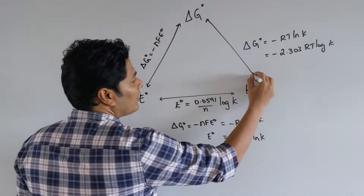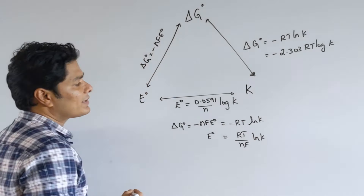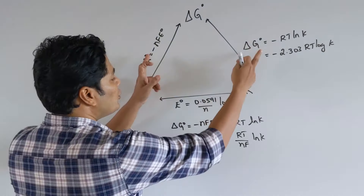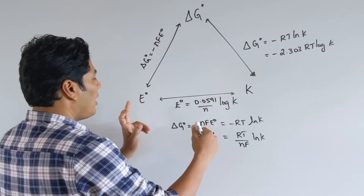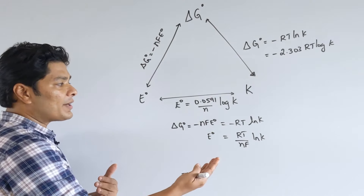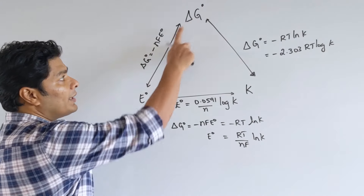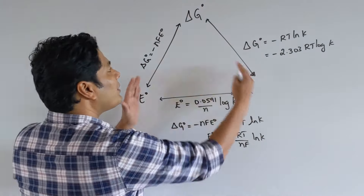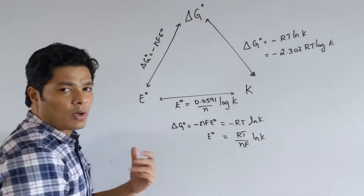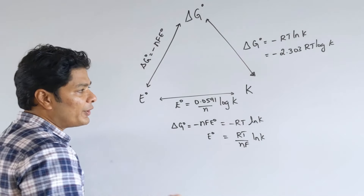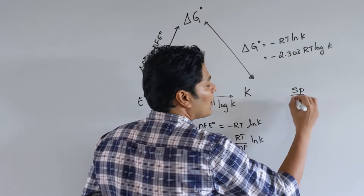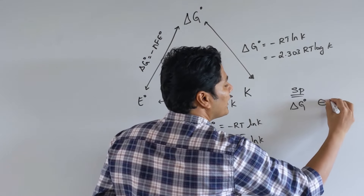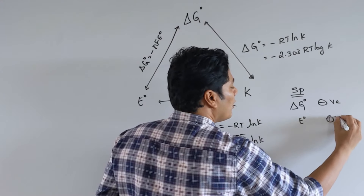Remember this triangle — I usually call it the 'holy triangle.' It relates three different properties and you should be able to do any of them. These two equations will give you the setup. For a spontaneous reaction, E° is positive and ΔG has to be negative. Anytime you want a spontaneous reaction, ΔG has to be negative.